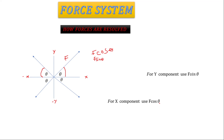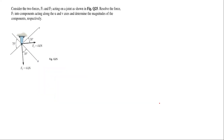This example considers two forces F1 and F2 acting on a joint as shown. We have F1 and F2 acting at the joint, and also a direction v. We are supposed to find the components acting along u and v — that is, find Fu and Fv, the forces acting along u and v, and determine their magnitudes respectively.